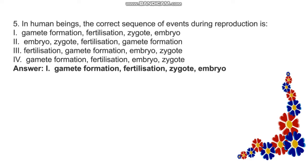In human beings, the correct sequence of events during reproduction is: Option A — Gamete formation, fertilization, zygote, embryo. Option B — Embryo, zygote, fertilization, gamete formation. Option C — Fertilization, gamete formation, embryo, zygote. Option D — Gamete formation, fertilization, embryo, zygote. The answer is: Gamete formation, fertilization, zygote, embryo.